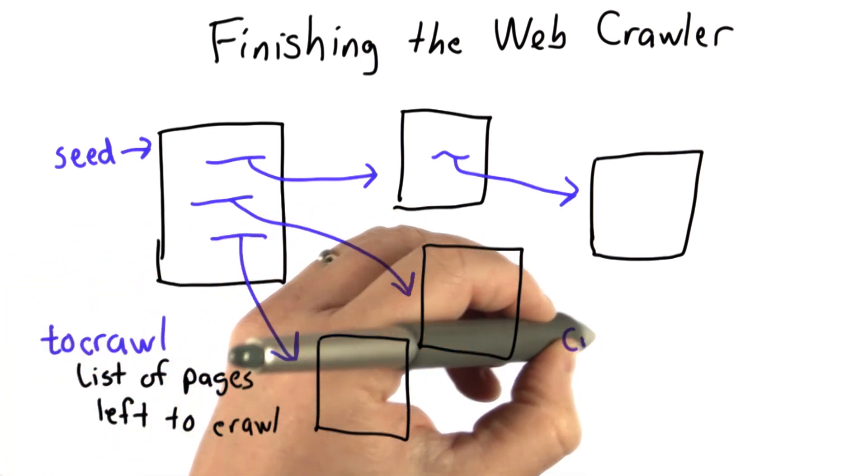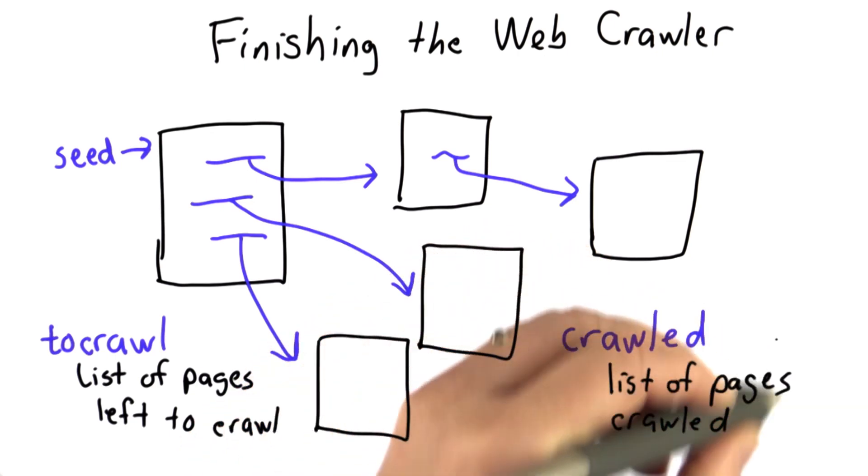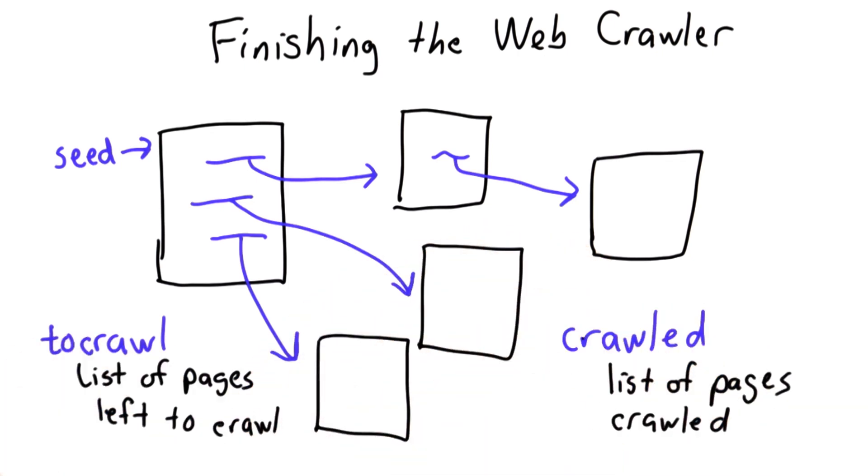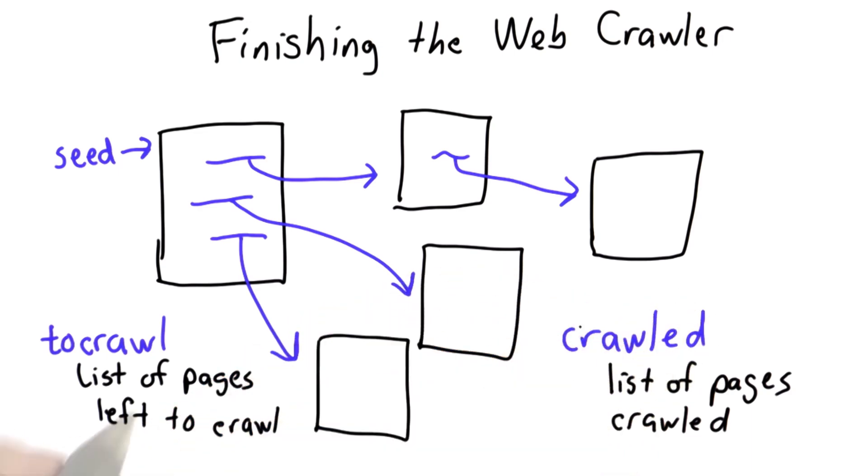The other variable we want is to keep track of all the pages that we've crawled. At the end of our crawl, this is the result. We want to know all the pages that we found. That will be stored in the variable we'll call crawled.